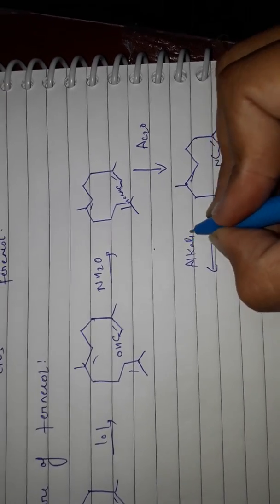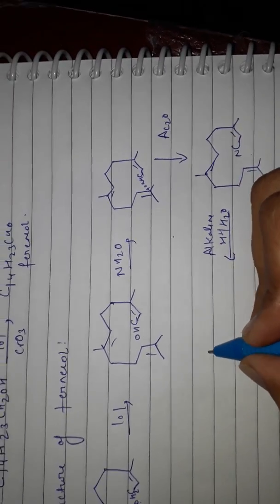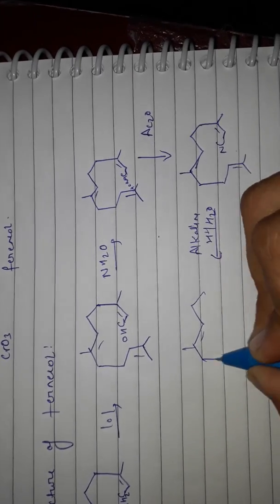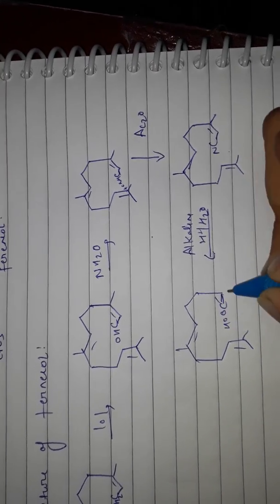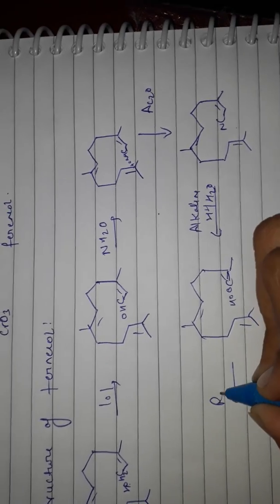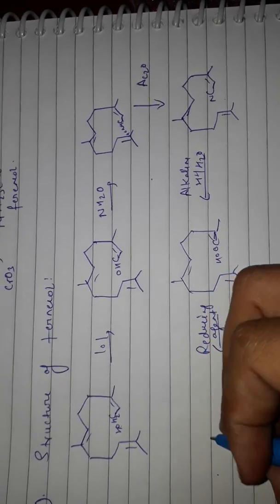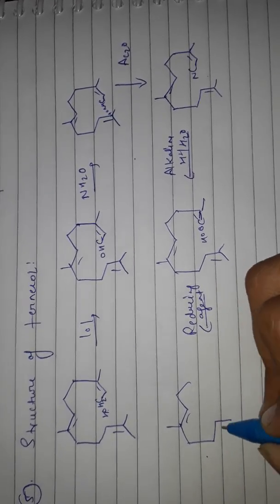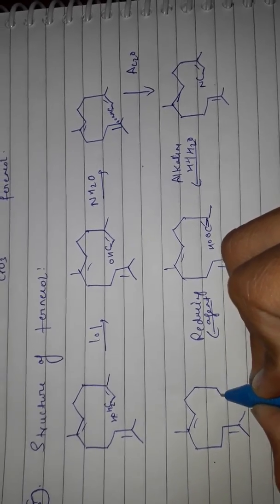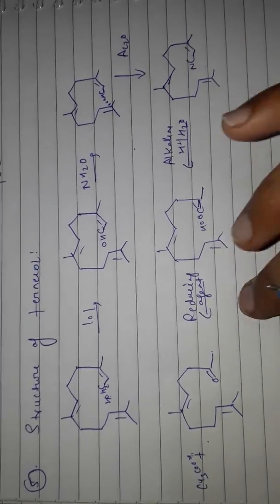Under alkaline conditions with H plus H2, the acid structure involves an OOH reducing agent. This reducing agent leads to the formation of acetone. The COOH product gives the complete structure of farnesol.